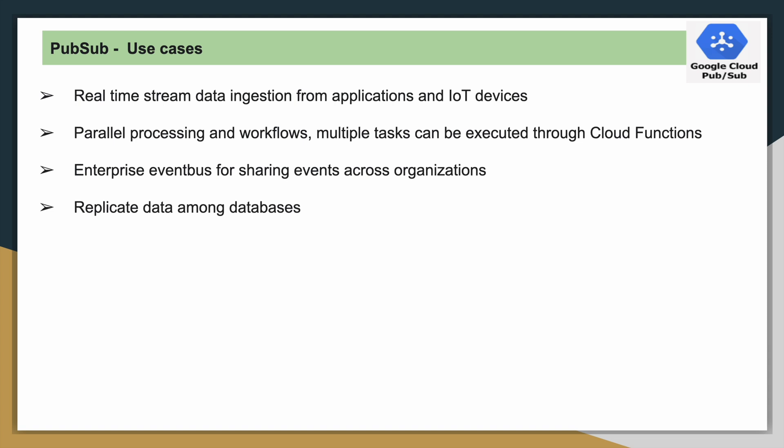The second use case is parallel processing and workflows. For example, if you have to perform parallel tasks — especially using Cloud Functions and PubSub — this combination is very useful. If you have to perform multiple tasks or multiple lightweight ETLs in parallel, PubSub and Cloud Functions can solve the problem. We will see that combination in upcoming demos and videos.